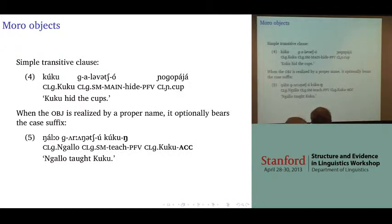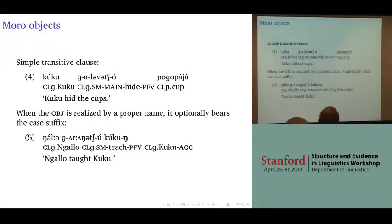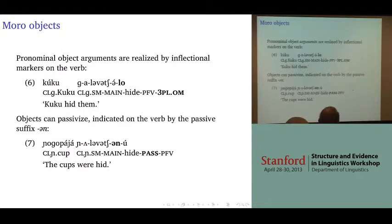Here's a basic transitive sentence in Moro: 'Cuckoo hid the cups.' The object comes after the verb. When the object is realized by a proper name, it optionally bears a K suffix — the bold-faced engma — glossed as accusative. When it's pronominal, it appears as an object marker attached to the verb, also shown in bold-faced.